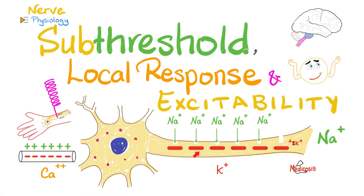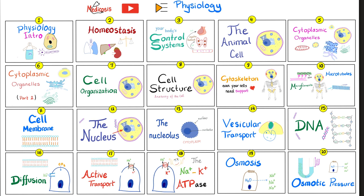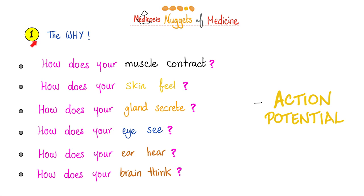Hey guys, it's Medicosis Perfectionitis, where medicine makes perfect sense. Let's continue our physiology playlist. In the last videos we talked about the action potential. Today we'll talk about what happens when you give the neuron a sub-threshold stimulus, the local response, and the factors that increase or decrease nerve excitability. Today's video is number 48 in my physiology playlist.